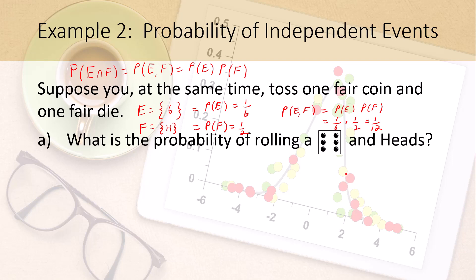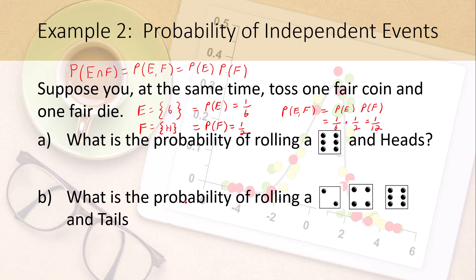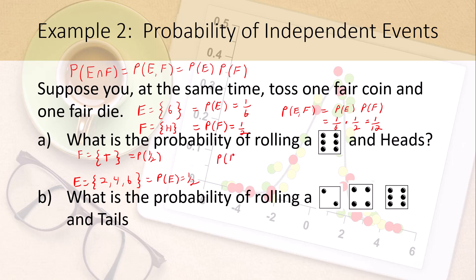Next: what is the probability of rolling an even number and getting tails? Here E is the outcome of rolling a two, four, or six, so P(E) = 1/2. F is flipping tails, and P(F) = 1/2. So P(E and F) = P(E) × P(F) = 1/2 × 1/2 = 1/4.